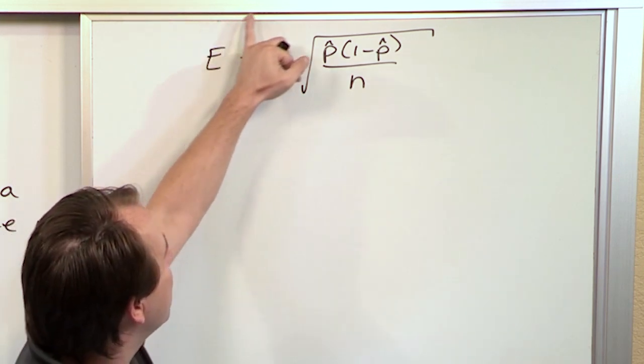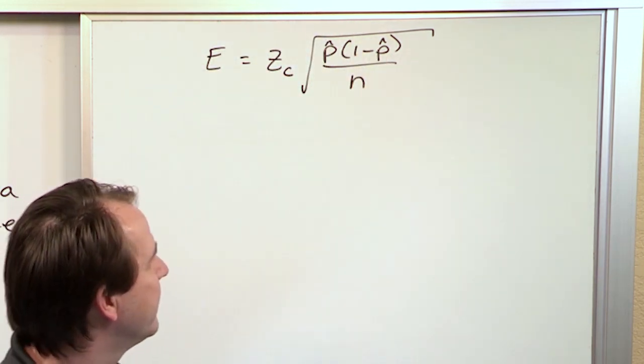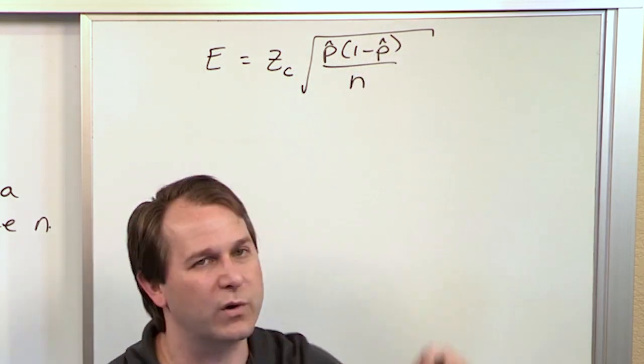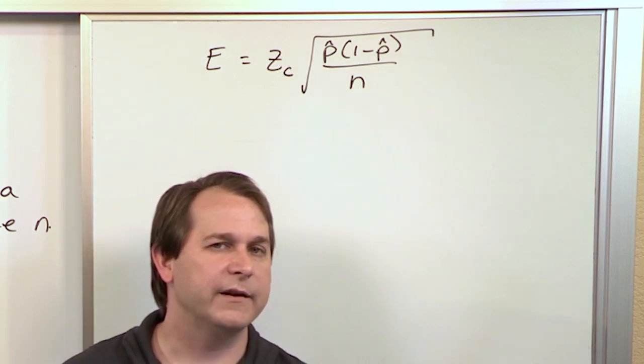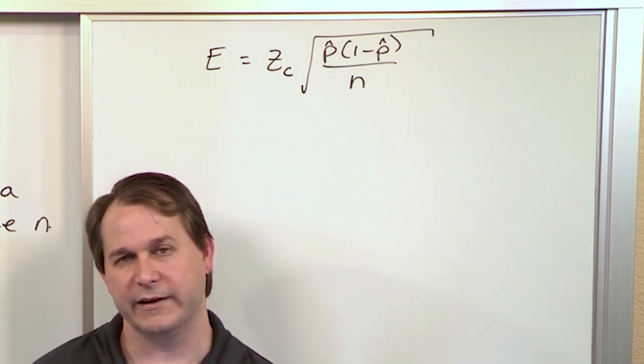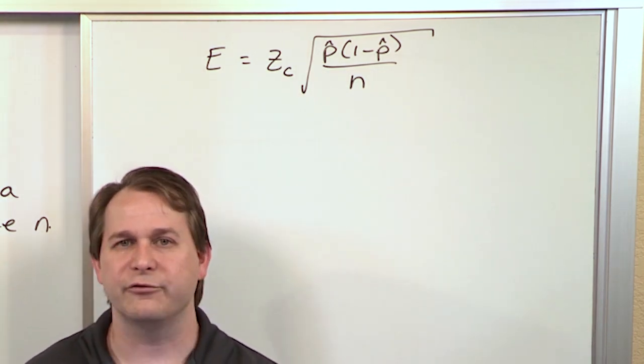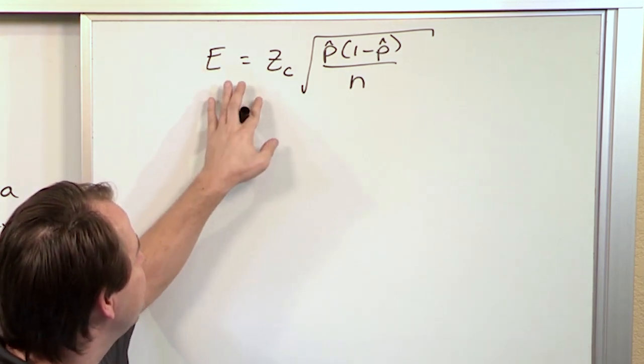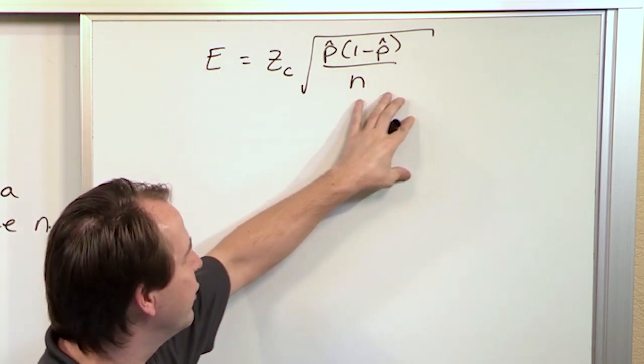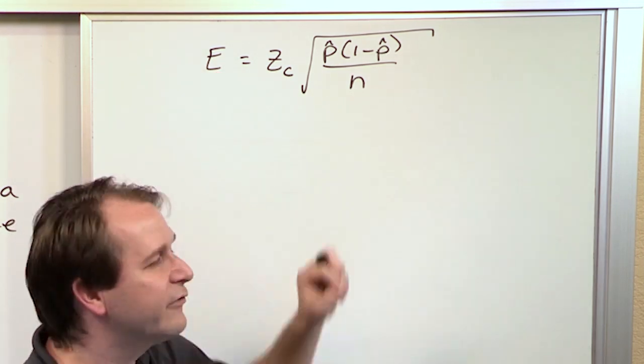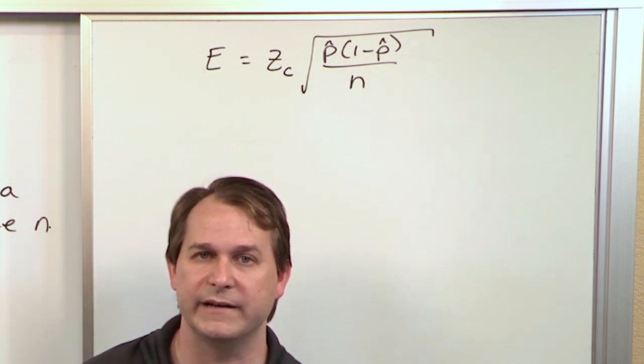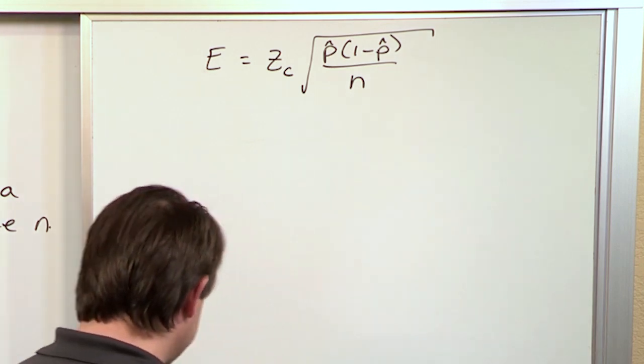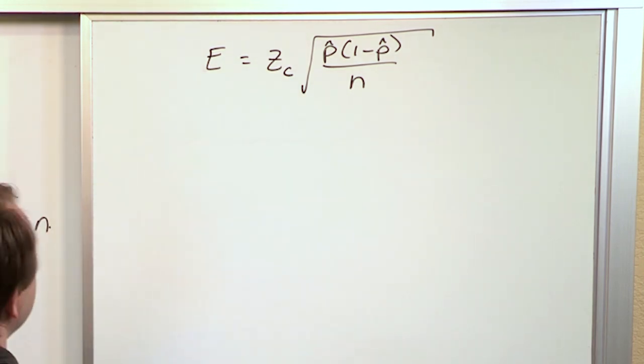So what we really want to do is solve this equation for n, which is not only in the denominator of a fraction but also inside the square root. A lot of students ask me over the years, when will I ever use algebra? Well, this is a great example. Your problem is not given in such a way that you can use this equation as is. You need to rearrange and solve for n.